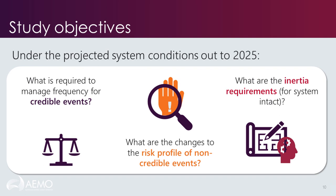To look at managing frequency out to 2025, we started off by asking three main questions. The first is: what is required to manage frequency for credible events, such as the trip of a single generating unit? To answer this, we first looked at how managing credible events would look using the existing frequency control arrangements. The second question is: what is changing for non-credible events — events larger than a single generation trip, such as the trip of multiple generating units. The third was the inertia requirements for the system under the usual condition of the system being in an intact configuration.